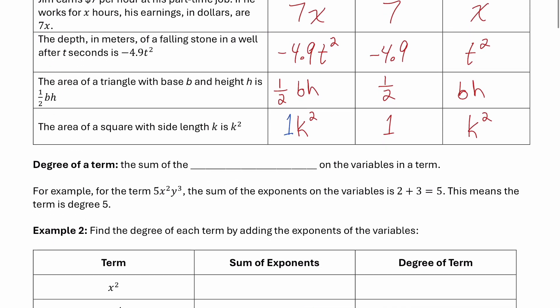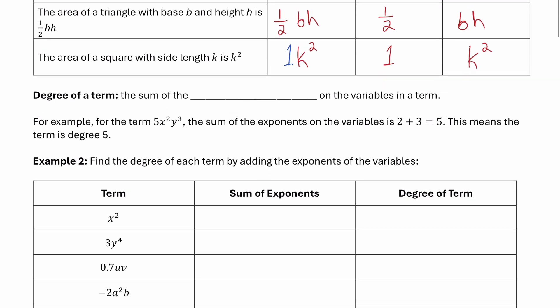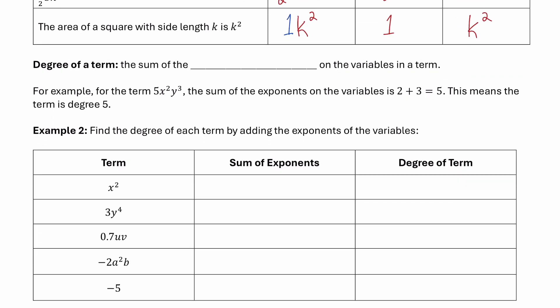Now let's move on to how we find the degree of a term. The degree of a term is the sum of the exponents on the variables in that term. For example, the term 5x squared y cubed — the exponents on the variables are 2 and 3. Two plus 3 is 5, which means that term is degree 5.